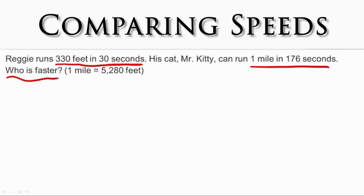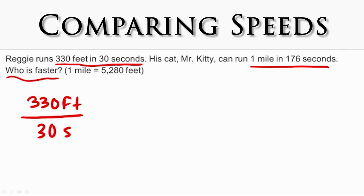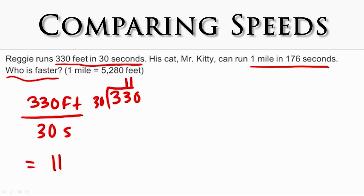Let's get started with Reggie. Speed is the rate of distance to time. Reggie runs 330 feet — that's the distance — in 30 seconds. That's not a unit rate because a unit rate has to have a denominator of one. Earlier in the lesson, we talked about how to convert speed to a unit rate: you take the distance and divide it by the time. That gives you the speed as a unit rate. In this case, it tells us that Reggie runs at a speed of 11 feet per second.